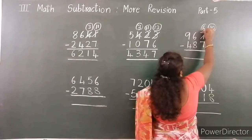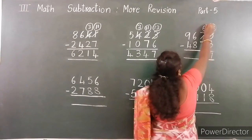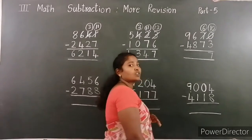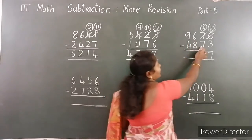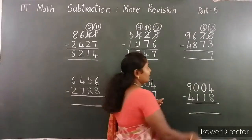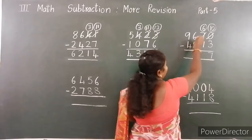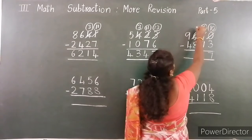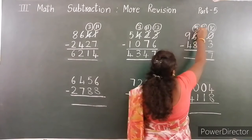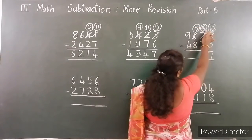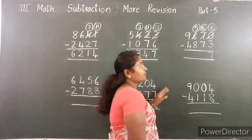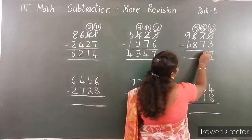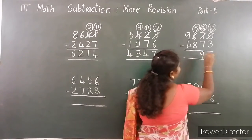Tens place: 6 minus 7. 6 is smaller than 7, so borrow from the hundreds place. Here 5 left. Now subtract: 16 minus 7 — the difference is 9.